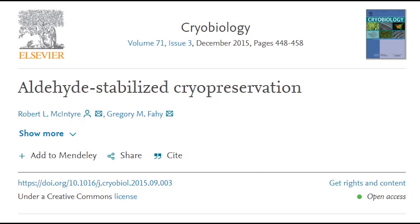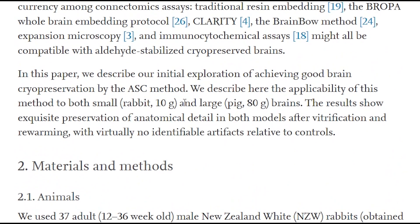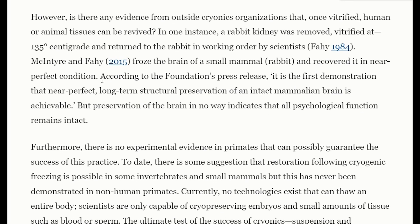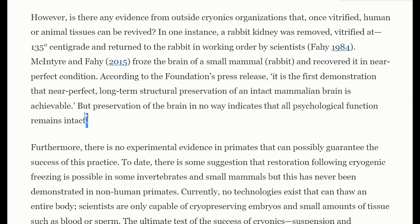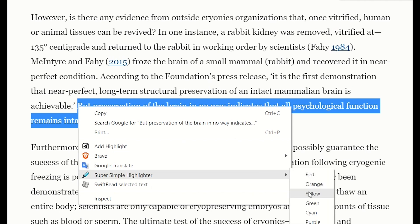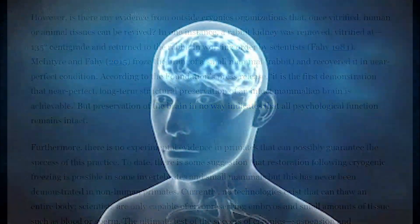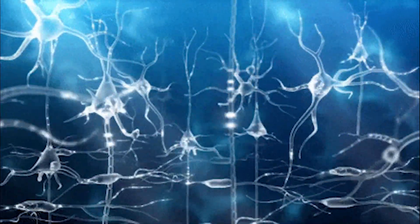In 2015, the brain of a small rabbit was frozen and recovered in near-perfect condition — described as the first demonstration that near-perfect long-term structural preservation of an intact mammalian brain is achievable. However, preservation of brain structure does not indicate that psychological functions remain intact. Until we agree on the molecular entity or phenomenon of what memory storage and brain function really is, it's difficult to infer whether memory would be preserved.